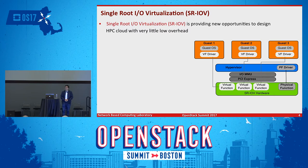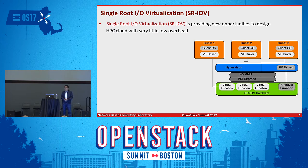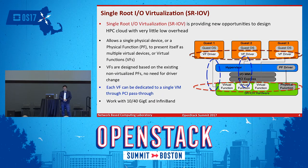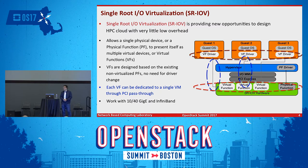Let me briefly introduce what SR-IOV does. Earlier, when doing networking or network-level virtualization, you typically used back-end and front-end driver-based solutions, where your packet goes back and forth with a lot of overhead. These days, people use SR-IOV because it allows the physical function or PCI device to represent itself as multiple virtual functions. Each virtual function can be dedicatedly mapped to a guest virtual machine, just like you own the network card by yourself, giving you very good performance. This works with both high-performance Ethernet as well as InfiniBand.